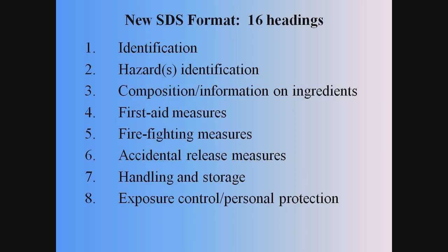In the new standardized format safety data sheets, the first thing provided is an identification of the product or chemical. Next, the hazards within the product will be identified, and then the composition or other information will be provided about ingredients. First aid measures will be discussed as well as fire fighting measures, followed by a section that discusses how to handle accidental releases. Handling and storage is the next category, and then the eighth category will discuss exposure control or personal protection — what kind of PPE may be needed when handling the product.